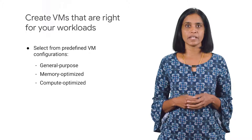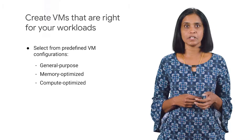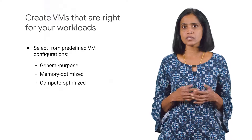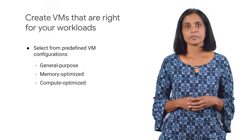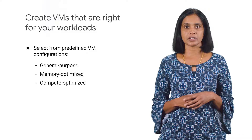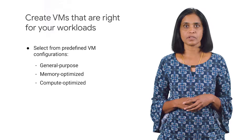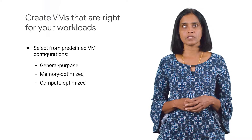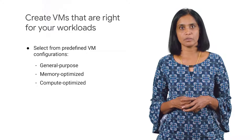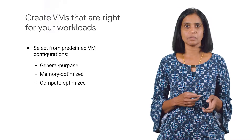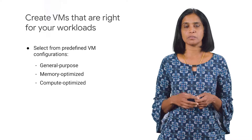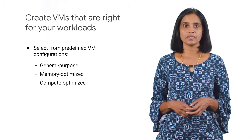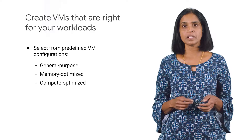Compute Engine also allows you to create virtual machines with the vCPU and memory that meet workload requirements. This has performance benefits and also reduces cost significantly. One option is to select from predefined configurations. A general-purpose configuration provides a balance between performance and memory. Or you can optimize for memory or for performance. You can create a machine type with as little as one vCPU and up to 80 vCPUs, or any even number of vCPUs in between. You can configure up to eight gigabytes of memory per vCPU.